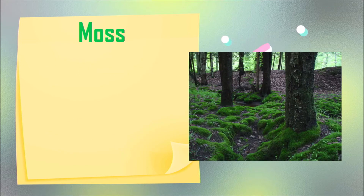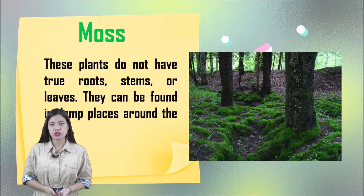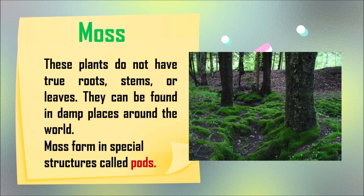Next, we have moss. Moss plants do not have true roots, stems, or leaves. They can be found in damp places around the world. As you can see in our picture, moss grows around trees. Moss forms a special structure called pods. They also grow on rocks, on trees, and in the soil. Pods hold a plant's seeds.